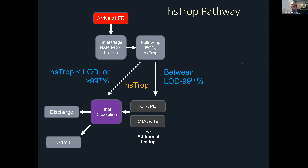With the introduction of high-sensitivity troponins over the last decade, we've been able to streamline this pathway to some extent by eliminating an extended observation period for some patients — but not all. Because of the added sensitivity for detecting myocardial injury, a large number of patients now have borderline elevated troponins between the limit of detection and the 99th percentile. The specificity of the high-sensitivity assay for ACS is still quite low, so this often still leads to additional downstream testing and in many cases no clear diagnosis at the time of discharge.